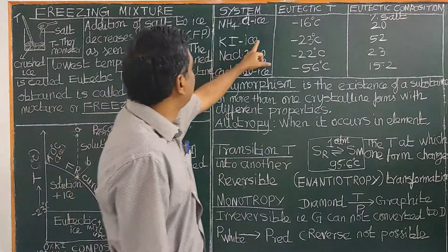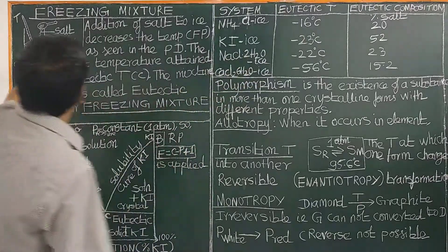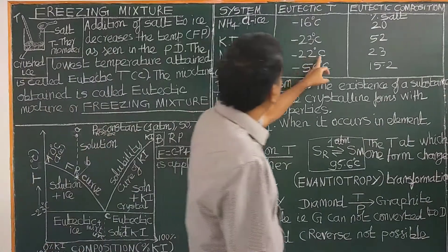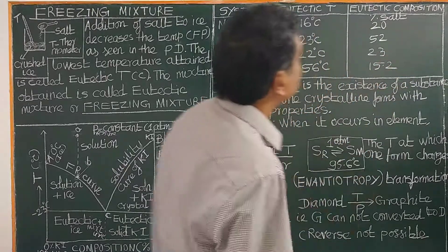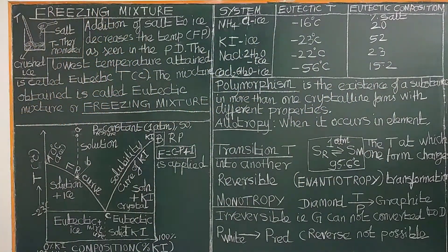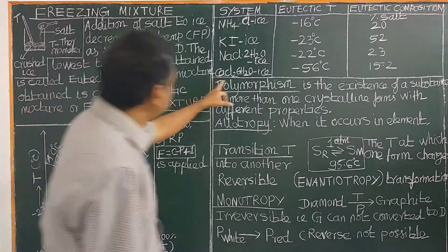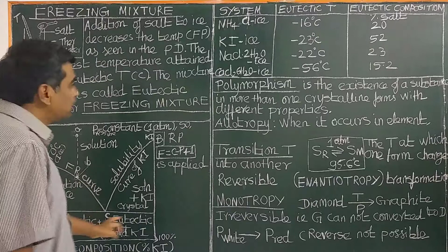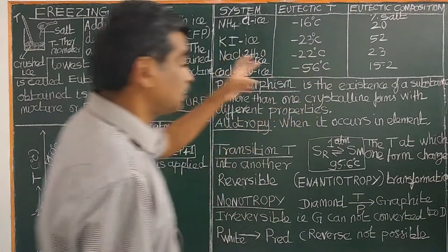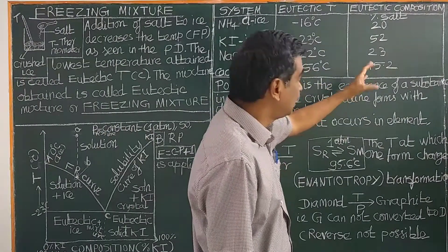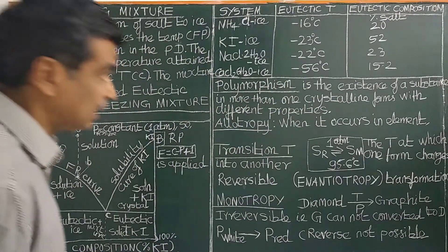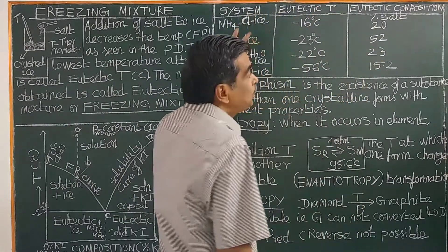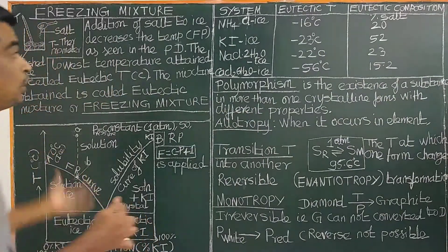On adding sodium chloride (NaCl·2H₂O) to ice, the temperature falls down. The lowest temperature attained is minus 22 degrees Celsius, and the eutectic composition is 23 percent of salt. Similarly, for calcium chloride hexahydrate (CaCl₂·6H₂O), the eutectic composition is 52.2 percent of calcium chloride.